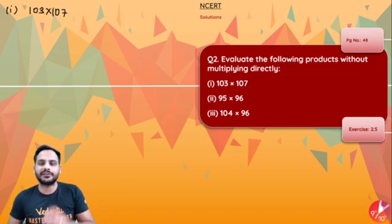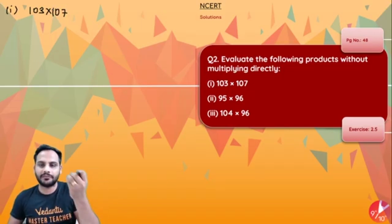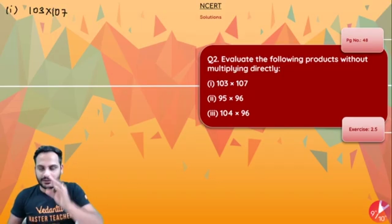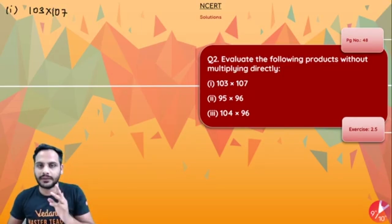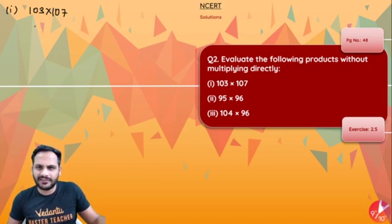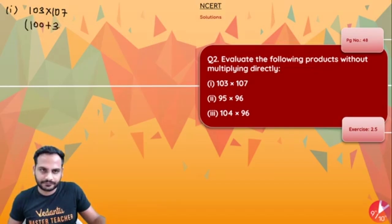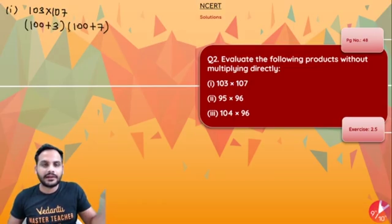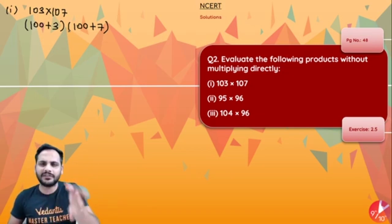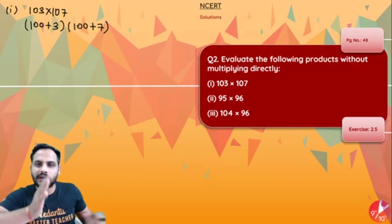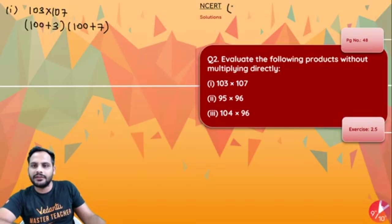In these kinds of questions, we try to choose a number whose calculations are easy. 100 is an easy number. So 103 I will write as 100 plus 3, and 107 I will write as 100 plus 7. You could also write it as 102 plus 1 and 102 plus 5, but 102 is comparatively harder than 100, so we always go for the easiest approach.